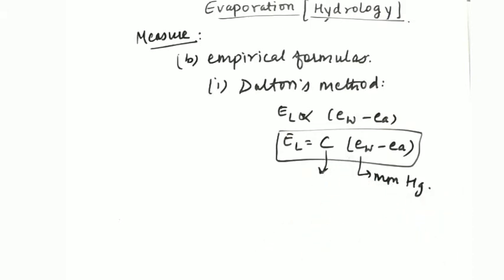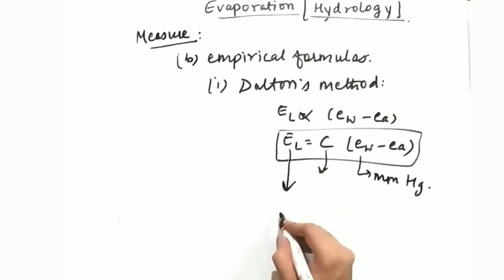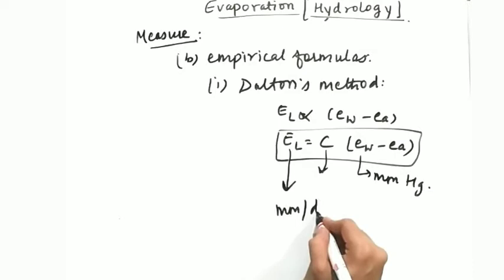C will be a constant. And when you will place all the values, then you will obtain the EL as millimeter per day. So this is the empirical formula. So this is the specialization that you have to know about it.